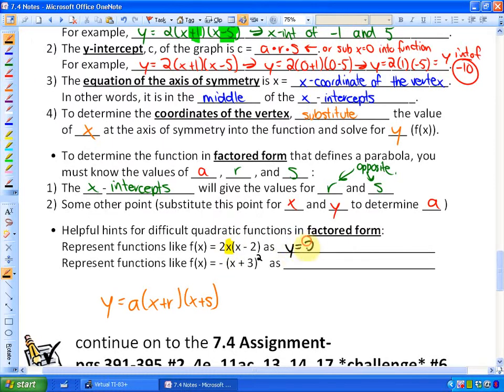You could represent as y = 2(x+0)(x-2), and that looks more like factored form. Another example: represent functions like f(x) = -(x+3)². This squared means that factor happens twice. So you could rewrite it as -(x+3)(x+3), and that looks more like the standard form y = a(x+r)(x+s).